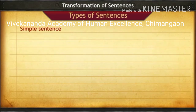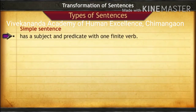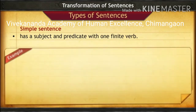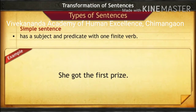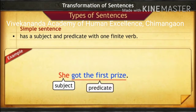The first type of sentence is a simple sentence. It has a subject and a predicate with one finite verb. For example, 'She got the first prize.' In this sentence, 'she' is the subject, 'got the first prize' is the predicate, and 'got' is the verb. This is a simple sentence.